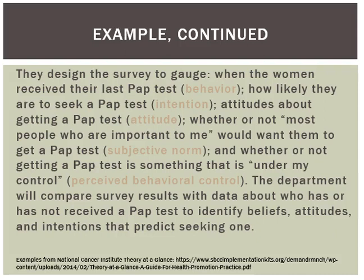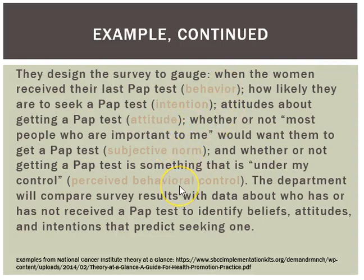Using the data collected from the survey, you could do several things. Because you have all of the constructs — the behavior as the outcome, the intention linked to the behavior, and the three constructs — you could find out what the attitudes, subjective norms, and perceived behavioral control are among women who do get paps. You could actually test this theory: if women with high perceived behavioral control are the ones participating and getting paps, that supports that construct.